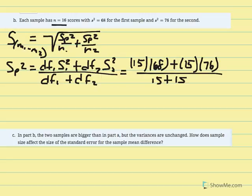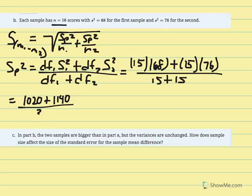Computing: 15 times 68 gives 1020, and 15 times 76 gives 1140, over 15 plus 15 equals 30. So 1020 plus 1140 divided by 30. In our calculators we get 72. The pooled variance remains 72.